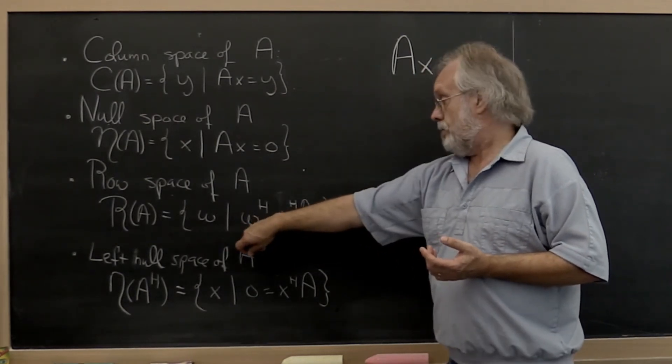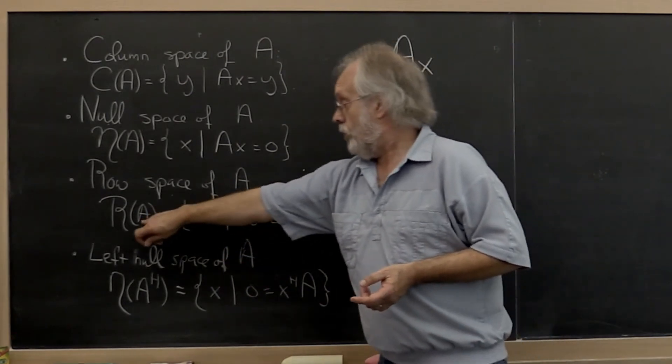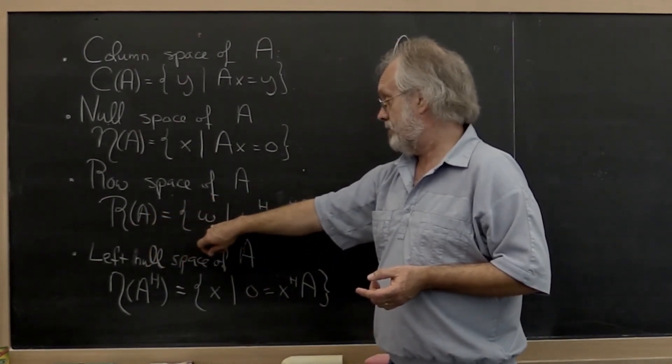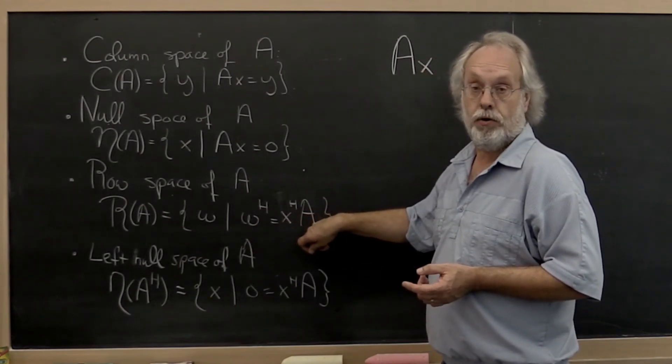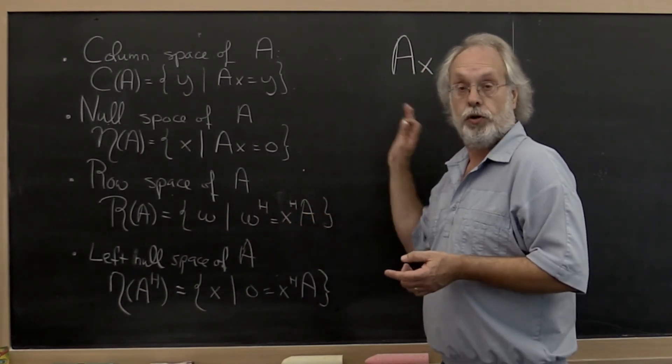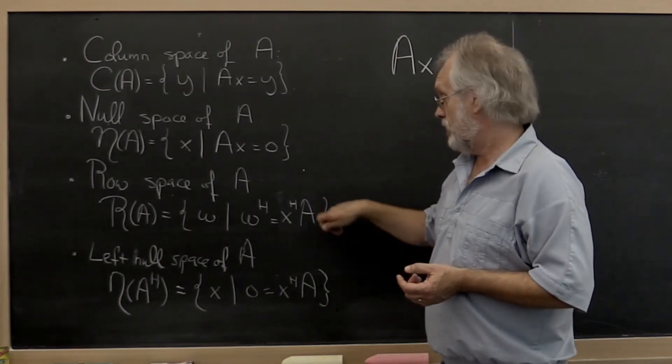That of course is a row vector. The row space of A consists of column vectors that can be created by taking linear combinations of the rows of A when you view those rows as column vectors. That's what this here says.